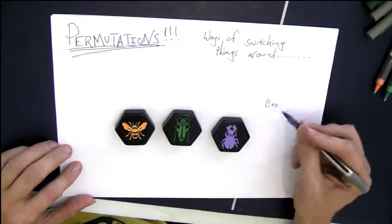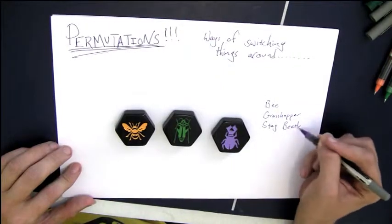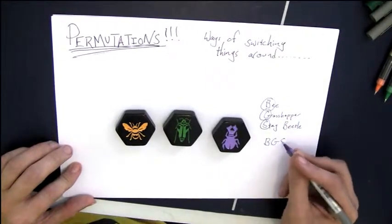So let's say we have three things, like this bee, grasshopper, and stag beetle, which we can represent with just the first letters B, G, and S.